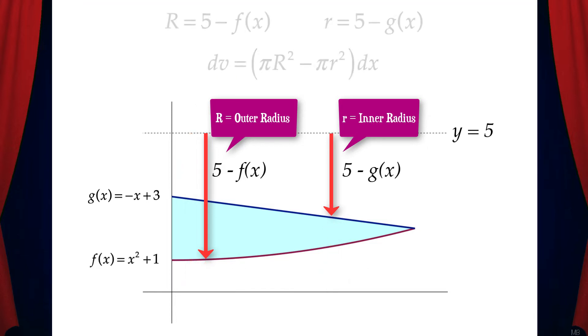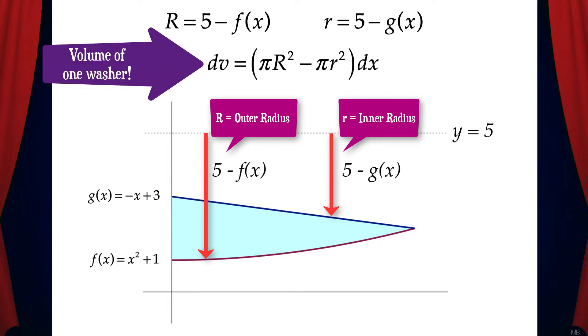Now that we have big R and little r, we can find dv, the volume of one washer.